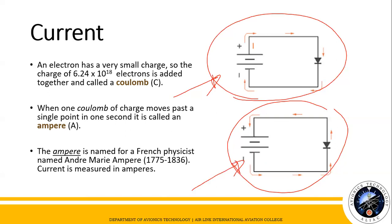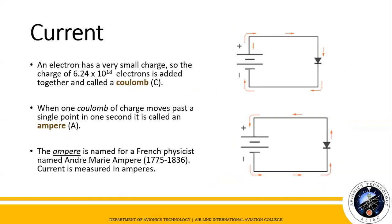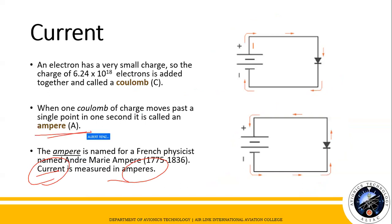An electron has a very small charge — the charge of 6.24 times 10 raised to 18 electrons equals one coulomb. So when one coulomb of charge passes a single point in one second, it is called an ampere. The ampere is named after the French physicist André-Marie Ampère (1775–1836). The current measurement is called ampere, and the symbol used is A.